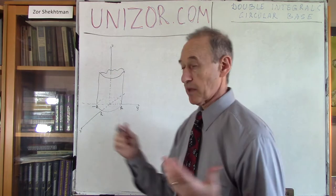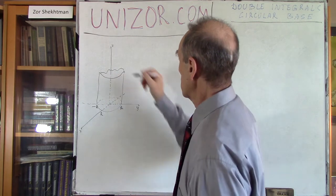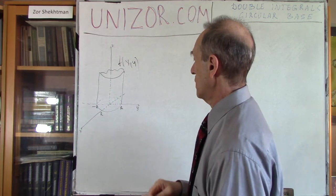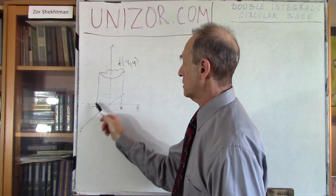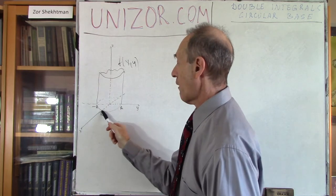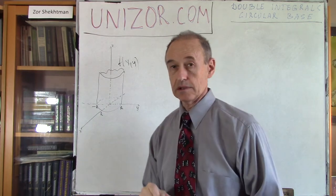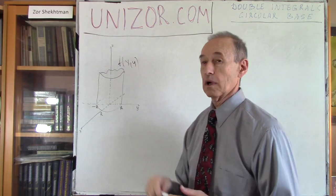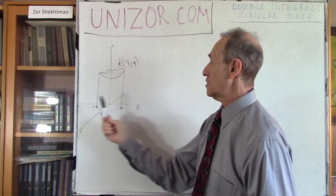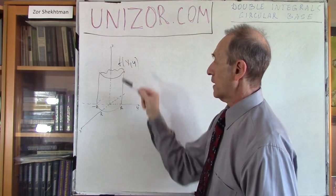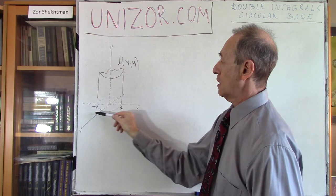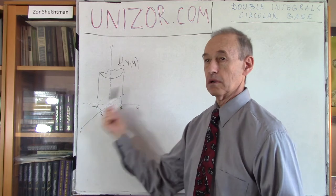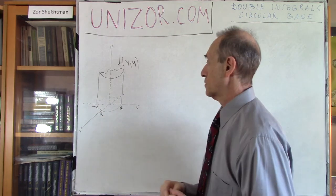This surface represents some kind of a function of two arguments, f of x, y, and it's defined on this circle of radius r with the center at the origin of coordinates. I would like to know the volume under this surface, which is bounded by the surface on top, the x, y plane on the bottom, and this circular surface on the sides.